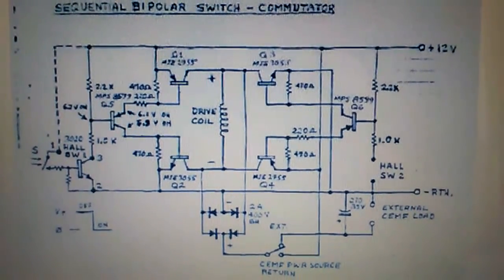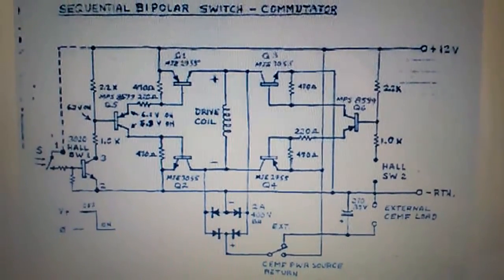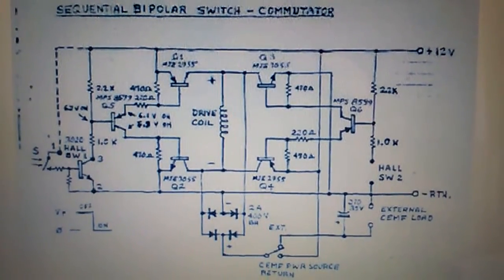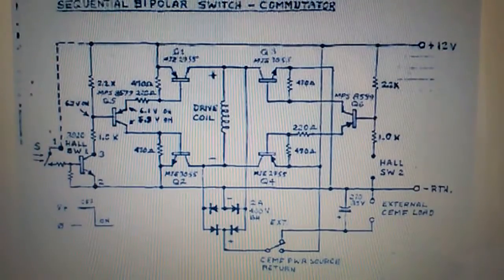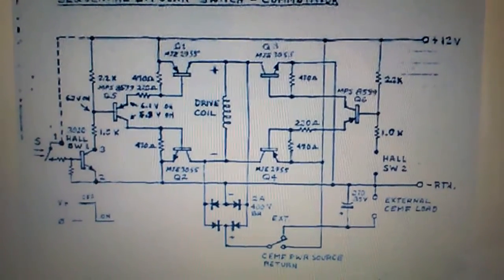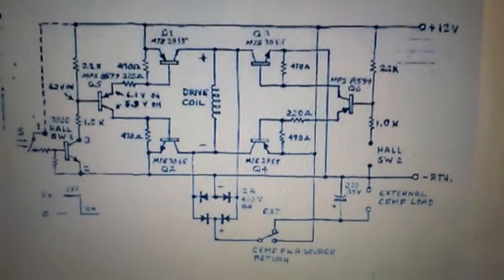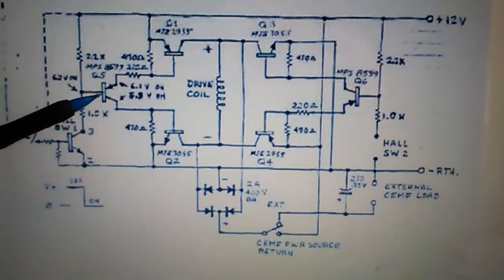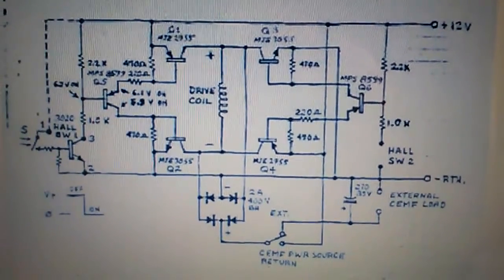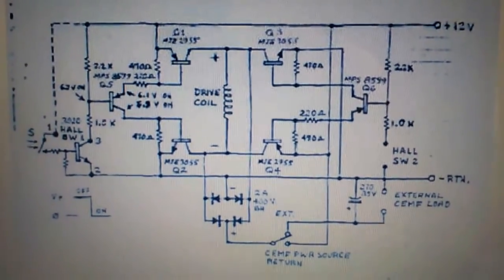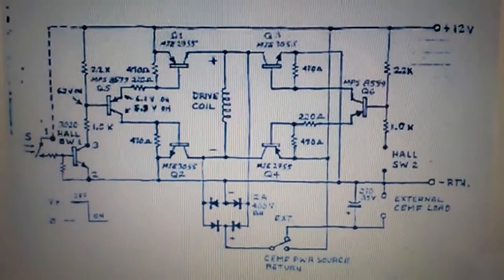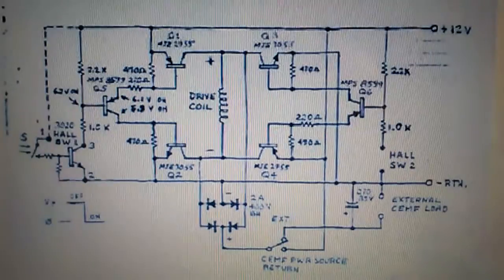Hey everybody, I'm doing a little information video on the sequential bipolar switch by John Badini and Ron Cole. This is the original schematic. The only thing I've done different is this transistor right here - I used a 2N2907 PNP transistor because that's what I had on hand, but other than that everything on this circuit is the same as the original.